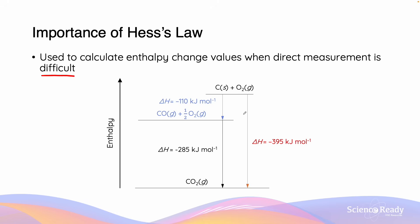An example is our previous one with the formation of carbon dioxide from carbon and oxygen. Experimentally, it would be quite easy to measure the enthalpy change for the combustion of carbon into carbon dioxide, indicated by the red arrow, as well as the combustion of carbon monoxide into carbon dioxide, indicated by the black arrow. However, it would be quite difficult to isolate the combustion of carbon into carbon monoxide — the blue arrow — because carbon easily fully combusts into carbon dioxide once it has formed carbon monoxide.